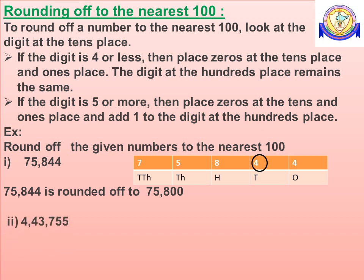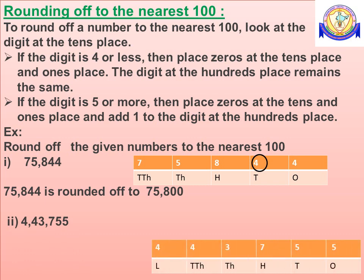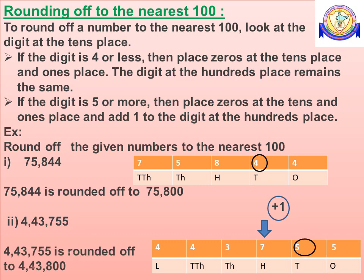Consider the number 4,43,755. In this number, the digit at the 10's place is 5. Then place 0's at the 10's place and 1's place and add 1 to the digit at the 100's place. Therefore, 4,43,755 is rounded off to 4,43,800.